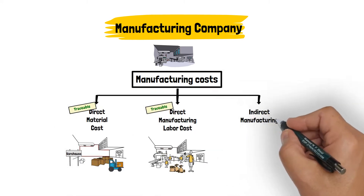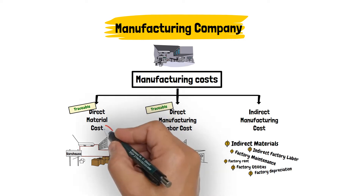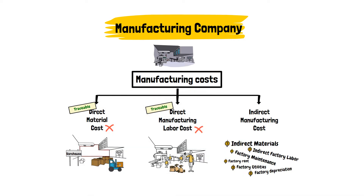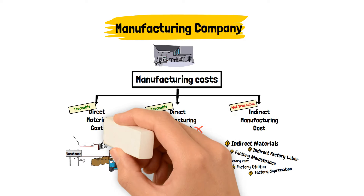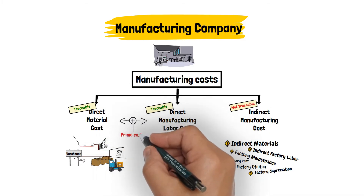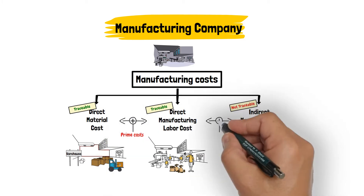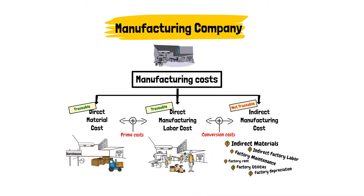Indirect manufacturing cost includes all the manufacturing costs other than direct material or direct manufacturing labor that are incurred to produce the product. These cannot be easily traced to the final product. Direct material plus direct labor are termed prime costs. Direct labor plus indirect manufacturing costs are termed conversion costs.